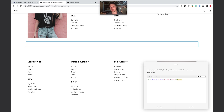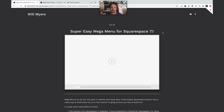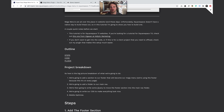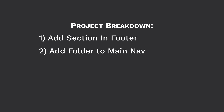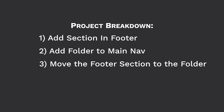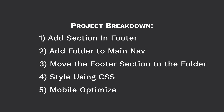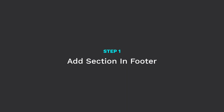All right, welcome. Here is the article on my website: 'Super Easy Mega Menu for Squarespace 7.1.' Let's scroll down to the project breakdown. The first thing we're going to do is add a section to our footer, then add the folder, then write some JavaScript code to do the actual moving, then some CSS to style it, and finally check it on mobile. Those are our five steps.